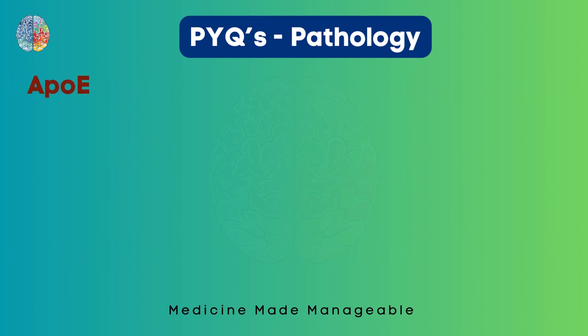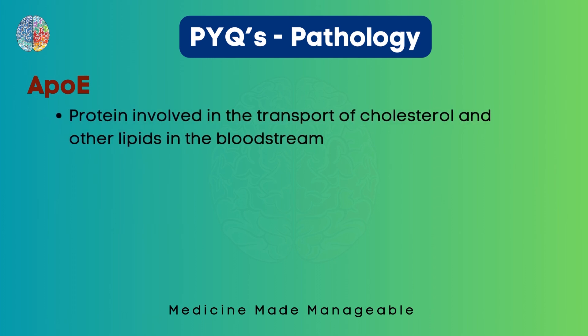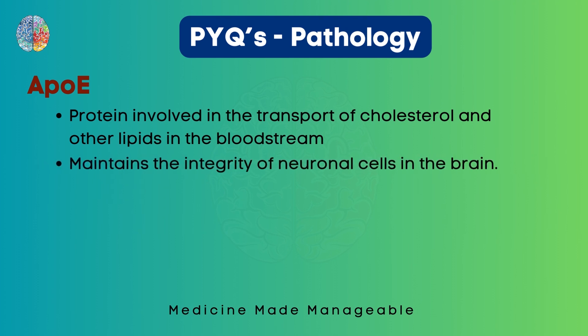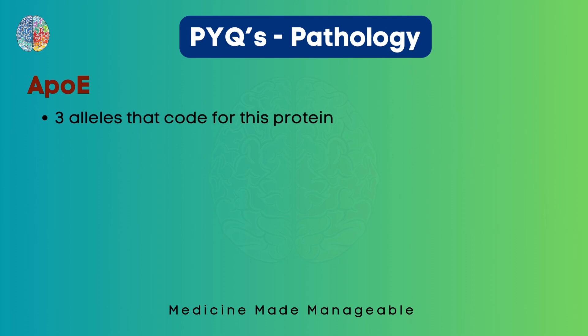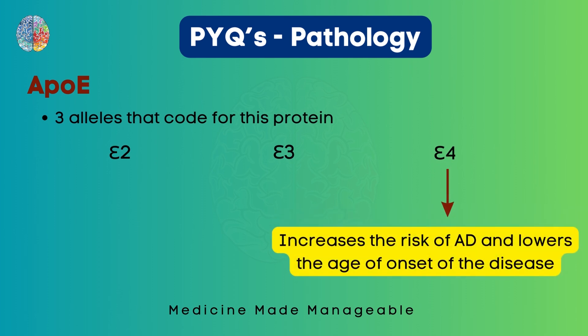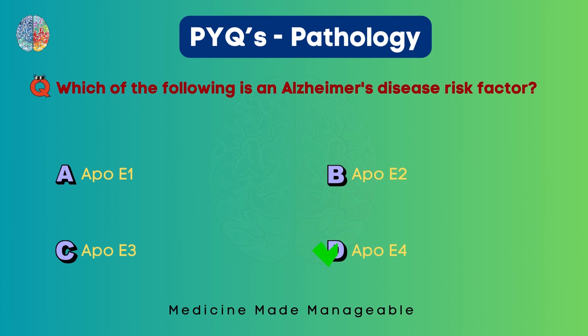ApoE is a protein involved in the transport of cholesterol and other lipids in the blood. It also maintains the integrity of neuronal cells in the brain. There are three alleles that code for this protein: Epsilon E2, E3, and E4. The answer is ApoE4, because this is the one that increases the risk of Alzheimer's disease and lowers the age of onset of the disease.